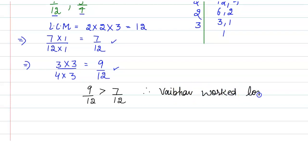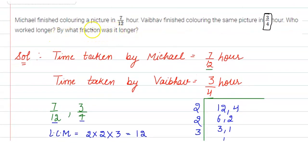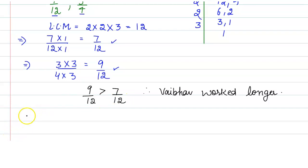Now in the next part, they are asking by what fraction was it longer. So by what fraction has Vaibhav worked longer? To find this, we will simply subtract the time taken by both Michael and Vaibhav. Difference will be 9/12 minus 7/12, which is 2/12, that is 1/6 hours. That means Vaibhav has worked 1/6 hours longer.